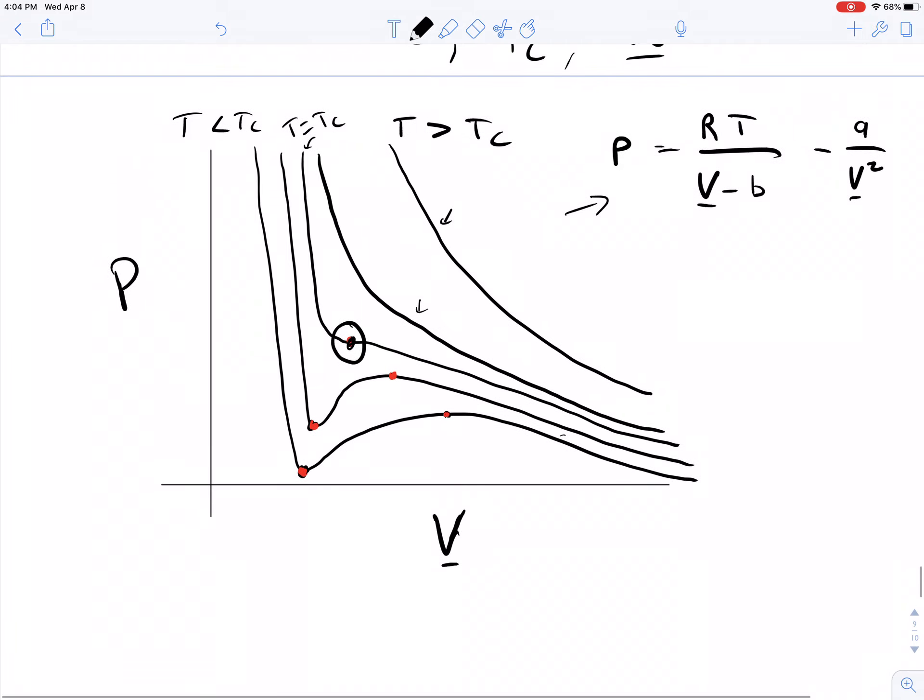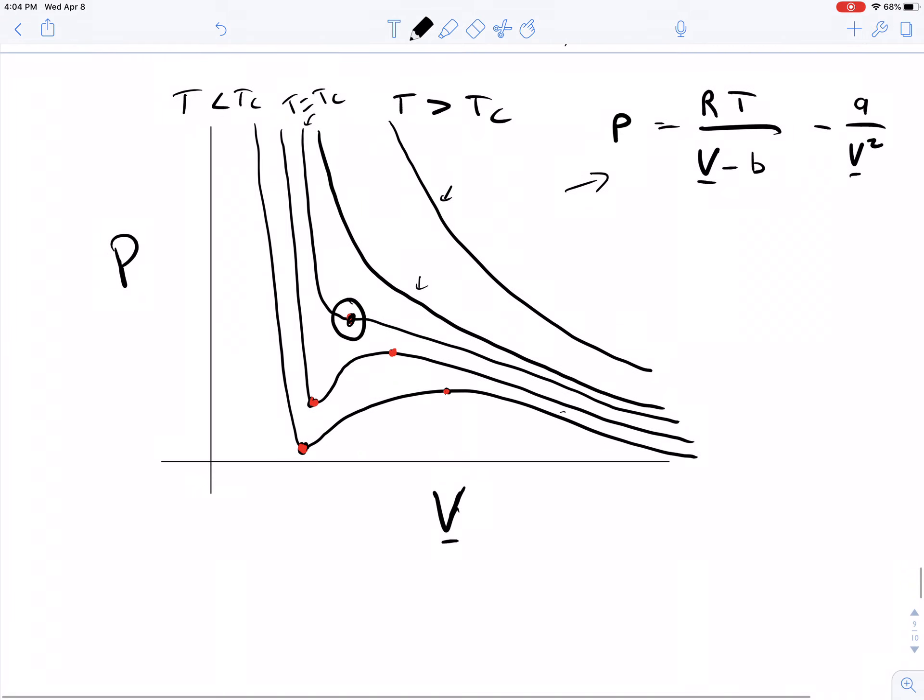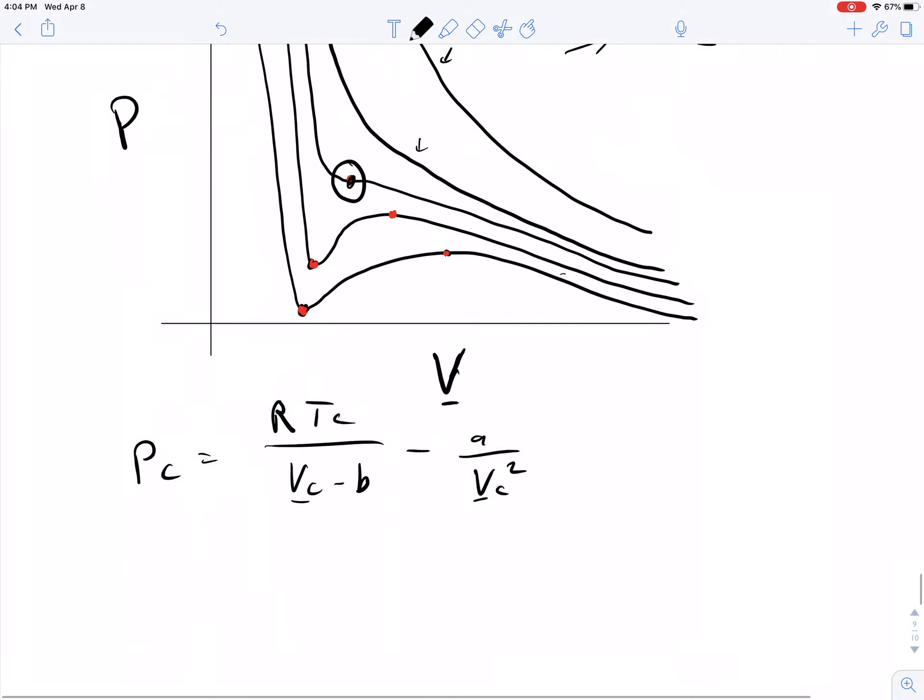Because this equation holds at all points, we also know that for the Van der Waals equation of state, PC equals R times TC over VC minus B minus A over VC squared. We're going to start with this equation and identify conditions. Because ultimately, PC, TC, VC, this is a measurable quantity.